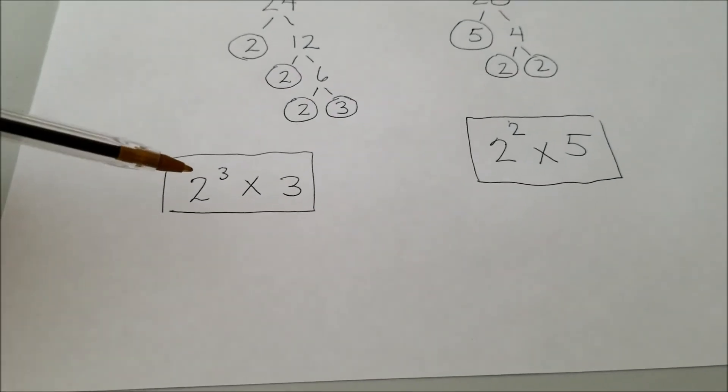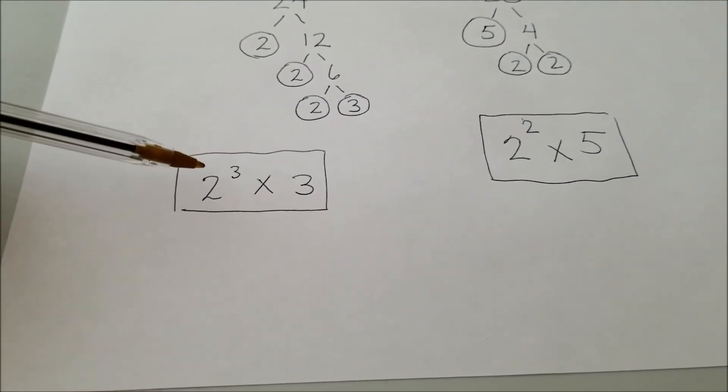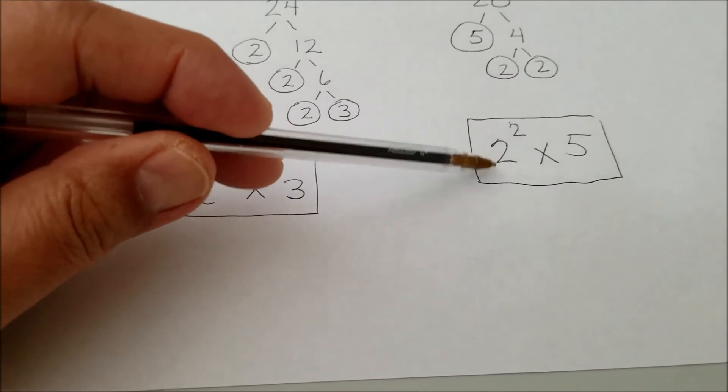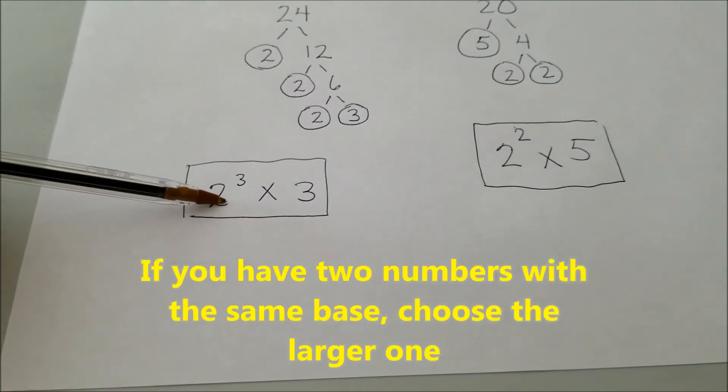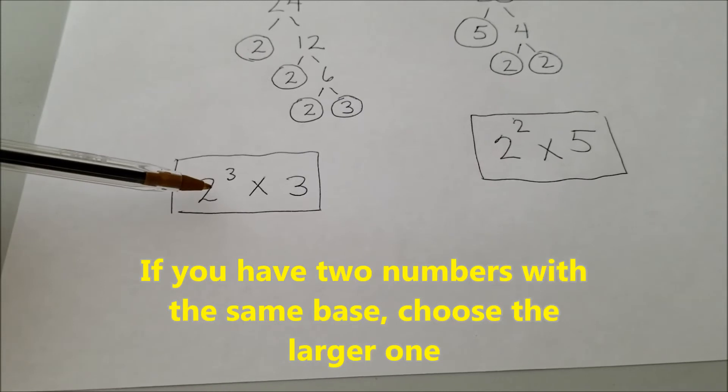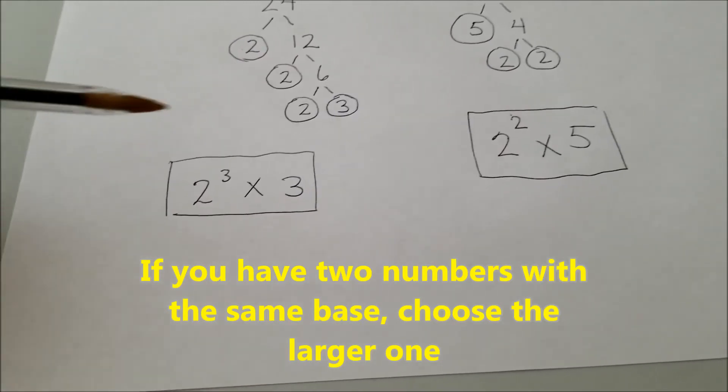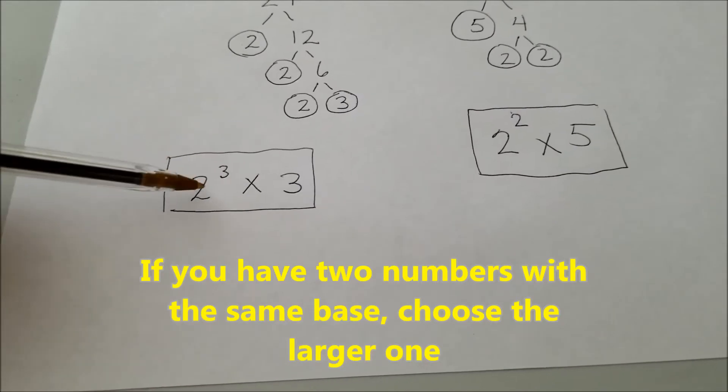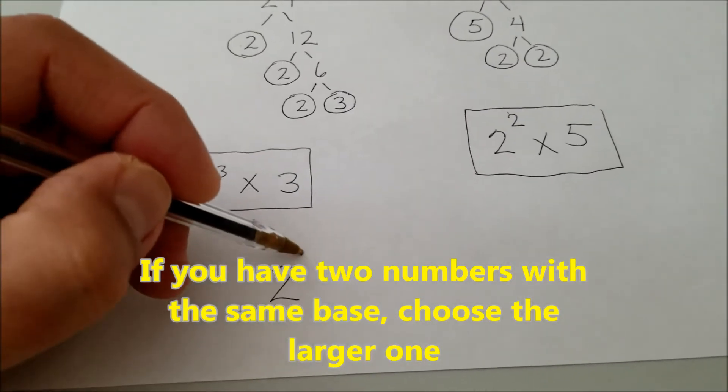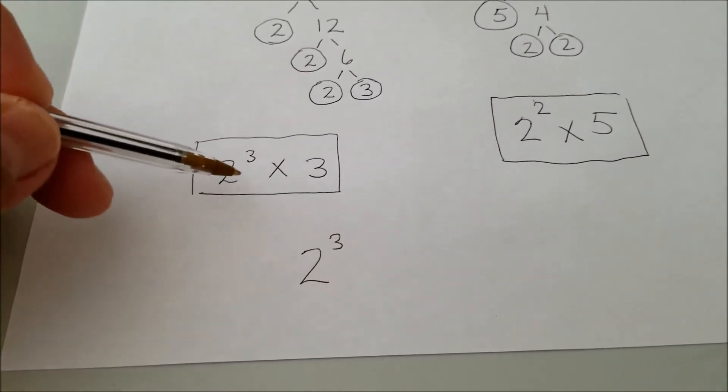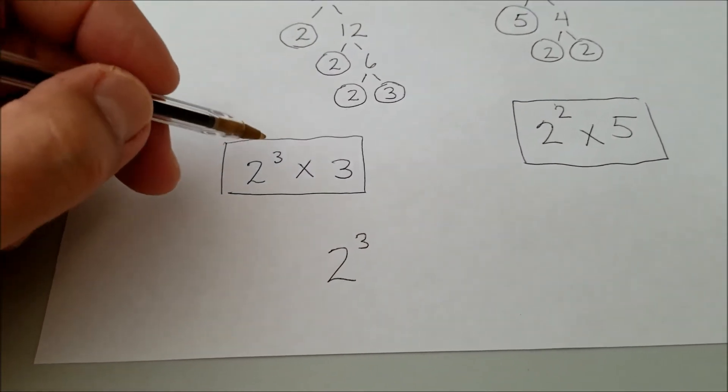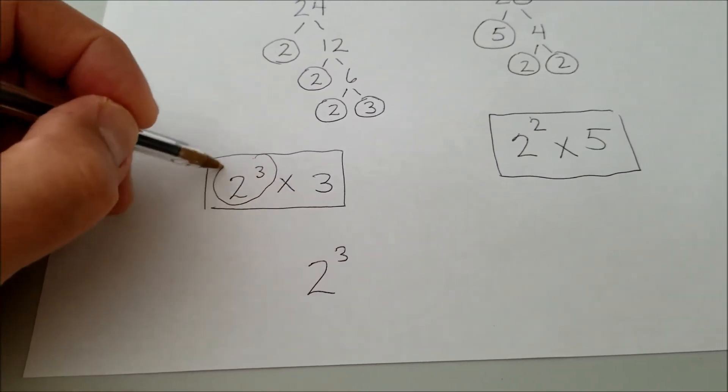What we're going to do is we're going to start with the lowest number. We have a base number of 2. But what we want to do is we want to grab the highest one or the one that's worth the most or the one that has the greatest value, which would be 2 to the third. 2 to the third is bigger than 2 to the second power. So we're basically going to be taking this 2 to the third.